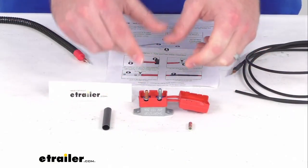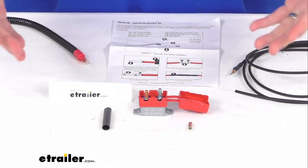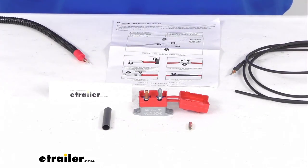This 30 Amp Circuit Breaker is going to help protect your vehicle from damaging shorts and overloads when you have an electric brake controller installed. This is going to provide protection for vehicles that are towing trailers that have up to six brake assemblies.